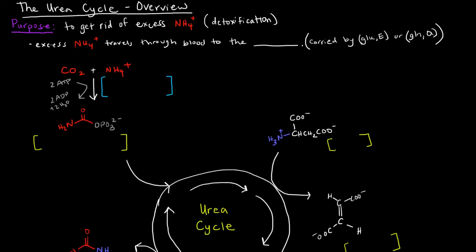So let's talk about the overview of the urea cycle. The purpose, of course, like I mentioned, is to get rid of excess ammonium ion. So basically, it's getting rid of a toxic compound, which is basically detoxification. So this excess ammonium ion travels through the blood to the liver, specifically, where the urea cycle occurs. Now, this ammonium ion is carried through the blood by glutamate or glutamine in the form of those amino groups on these compounds.